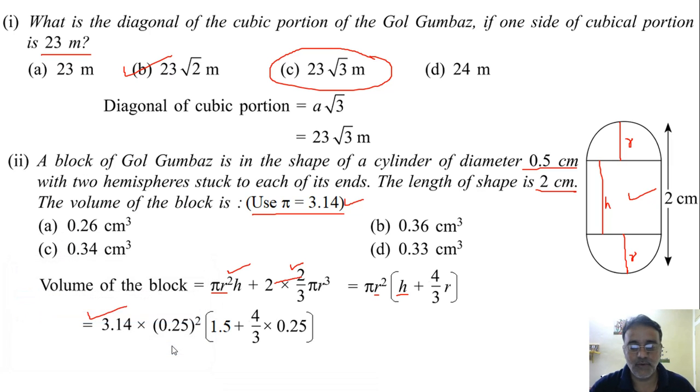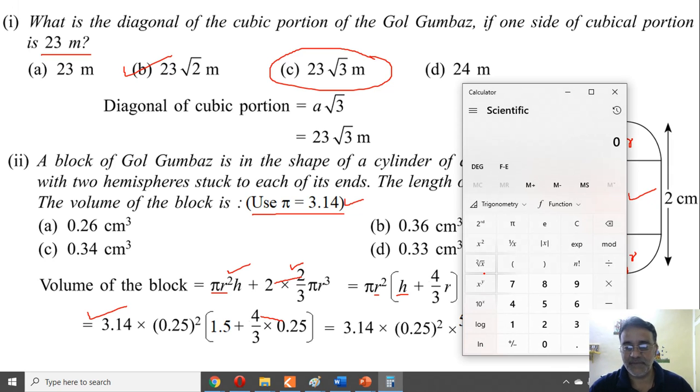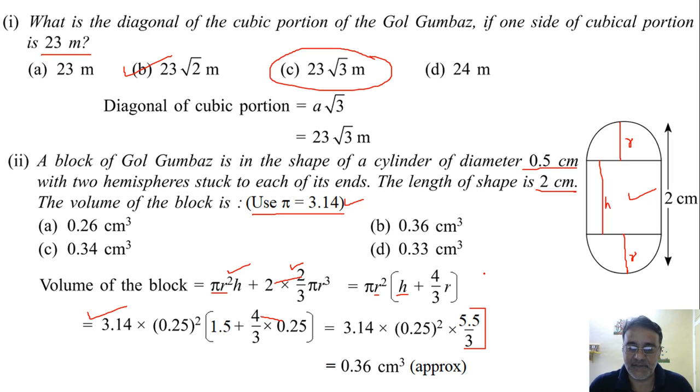So if we calculate what we are going to get? See if you multiply these two we will get 1. 0.25 into 4. So 1 by 3 plus 1.5. So 4.5 plus 1. 5.5 by 3. This is clear? Yes sir. Ab yahan ko simplify karna hai. So 3.14 into 0.25 into 0.25 into 0.25 into 5.5 divided by 3. So this is the answer 0.35979. So we will take 0.36 approximately cm3. Clear? Yes sir. So which option is the correct one? B. B. Right. Any doubt in this question? No sir.